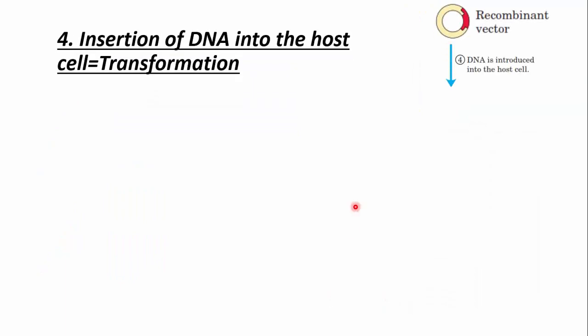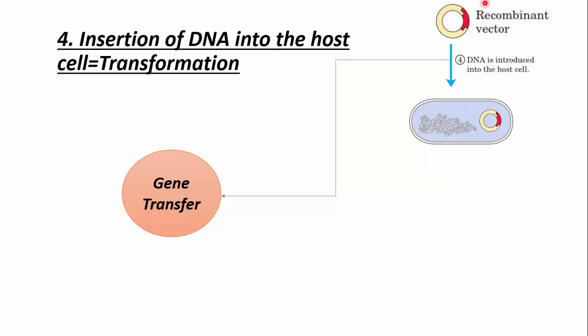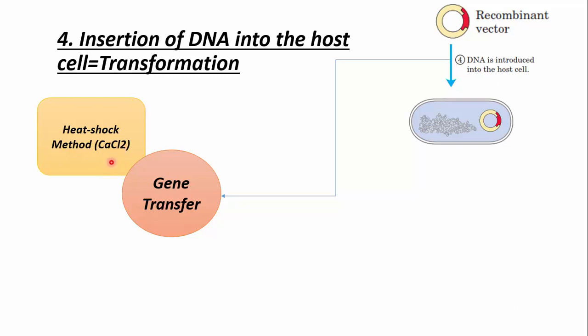We transform our recombinant vector into the host cell by the process of transformation. There are several methods to introduce recombinant vector into E. coli. The first is the heat shock method, where uptake of plasmid DNA by E. coli is carried out in the presence of calcium chloride at 0 to 5 degrees Celsius, followed by a heat shock at 37 to 45 degrees Celsius. The heat shock opens pores in the cell membrane allowing bacteria to take up the recombinant DNA; shifting back to 0 degrees closes the pores again.